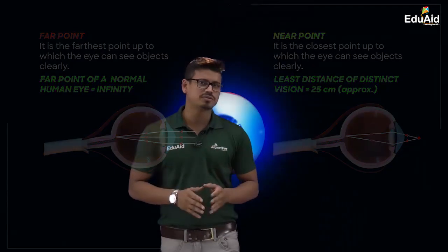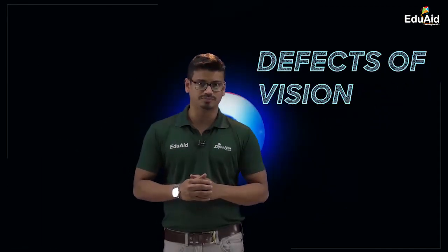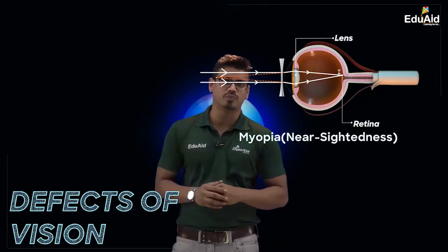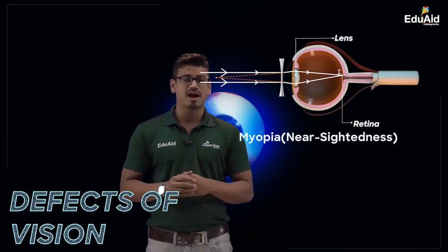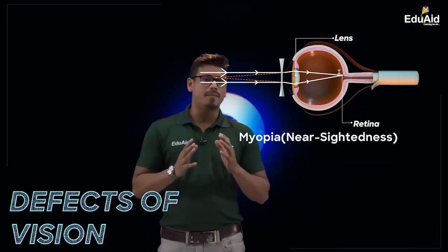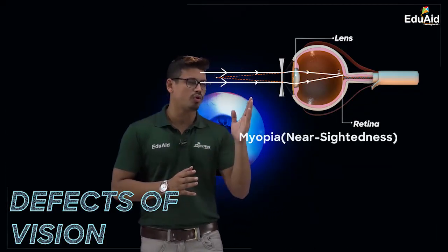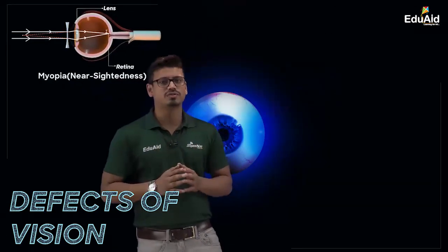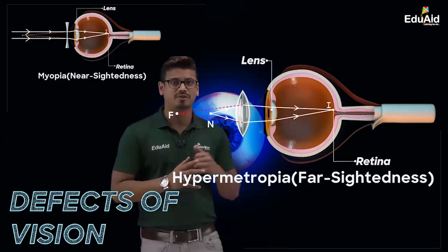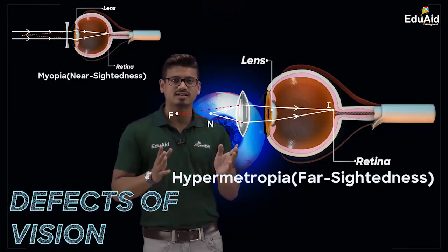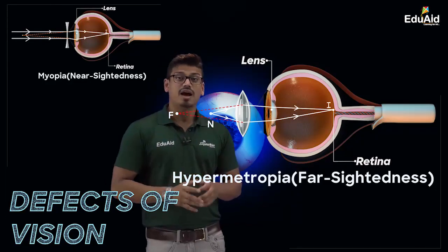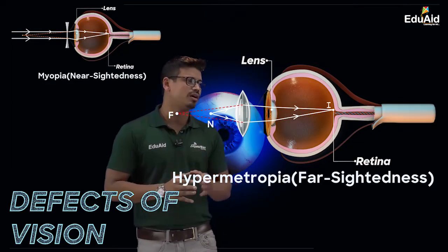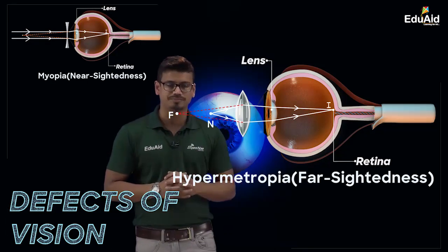After that we have studied about the defects of vision. The first defect is myopia, also called nearsightedness, and how myopia can be corrected by using a concave lens of appropriate power. The second defect is hypermetropia, also called farsightedness, and how it can be corrected by using a convex lens of appropriate power.